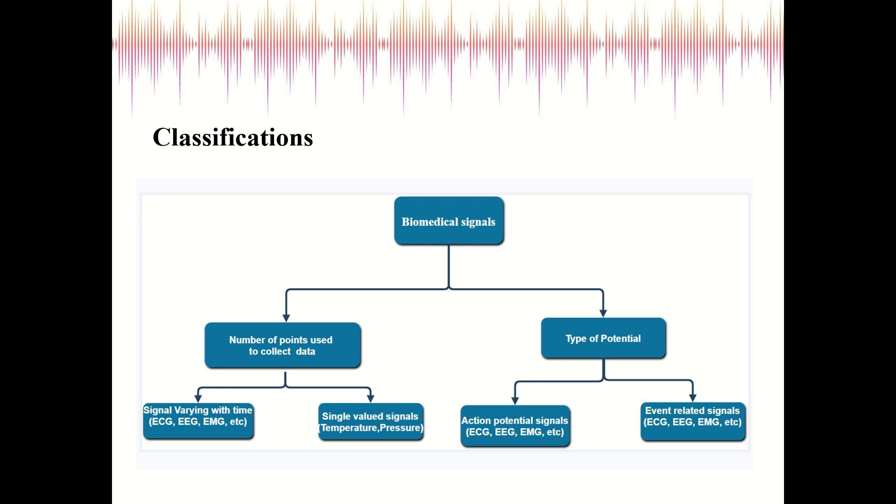Under the type of potential, we have action potential signals—a brief impulse that travels along the nervous systems of our human body. Then we have event related signals, also called evoked potential. There are certain changes or specific patterns observed in biosignals that are triggered by a particular event or stimulus. This is called event related signals.